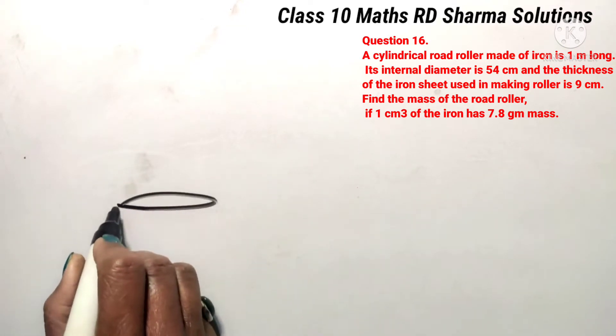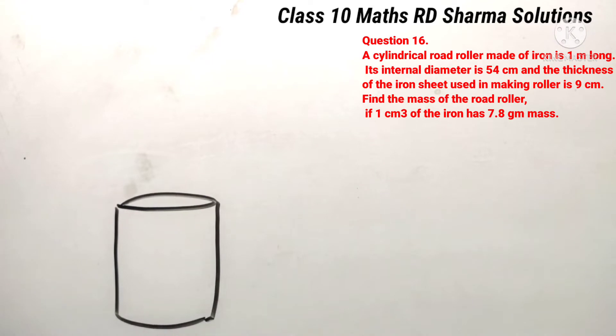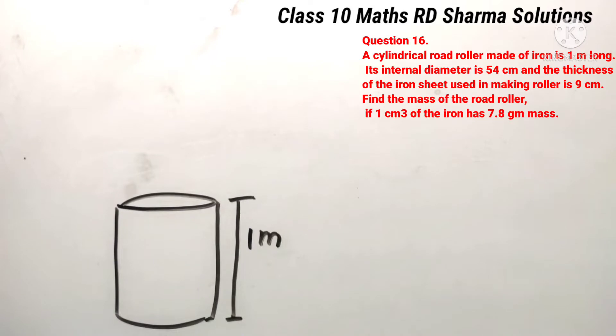Let's make a cylindrical road roller. If you want it, we can make it in a lateral form. We know its 1 meter long length. Road roller. So 1 meter long, so we know its height. Internal diameter is given.